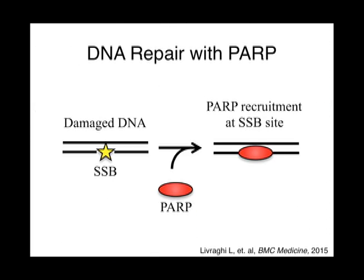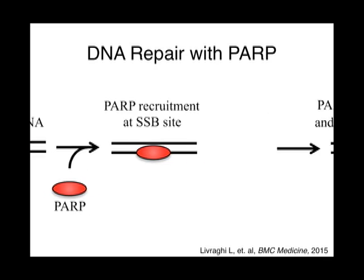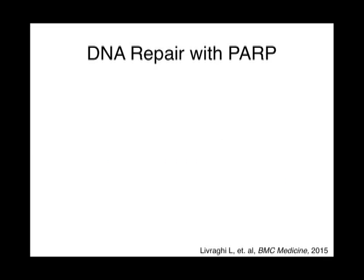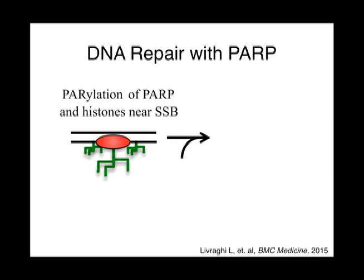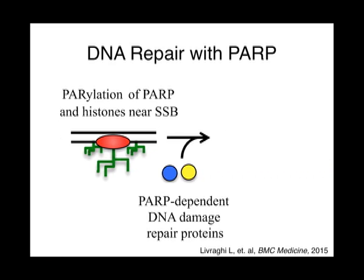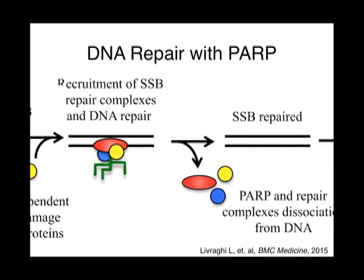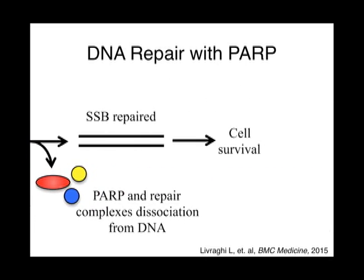In the absence of an inhibitor, PARP will be recruited to a single-stranded break site, which it identifies with its zinc finger nucleases. Then PARP initiates poly-ADP ribosylation of histones and chromatin remodeling enzymes. The presence of poly-ADP ribose chains, synthesized by PARP, recruits PARP-dependent DNA repair proteins. Finally, PARP and repair complexes dissociate from DNA for recycling, and the single-stranded break is repaired, leading to cell survival.